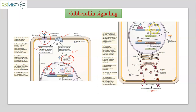Once the DELLA repressor is degraded, the GAMYB gene — which acts as a transcription factor — can be activated. It undergoes transcription and protein synthesis, enters the nucleus, and sits in the promoter region of the alpha-amylase gene, producing alpha-amylase mRNA. The corresponding proteins are then synthesized and secreted out.